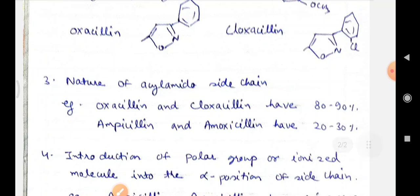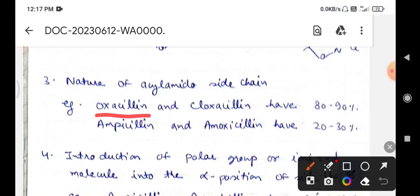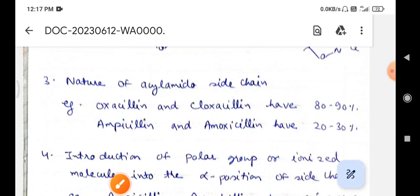The nature of the acyl-amidocyte chain helps to determine the plasma protein binding. The lipophilic group increases the plasma protein binding. For example, oxacillin and cloxacillin have 80-90% plasma protein binding, while ampicillin and amoxicillin have 20-30% of the plasma protein binding.